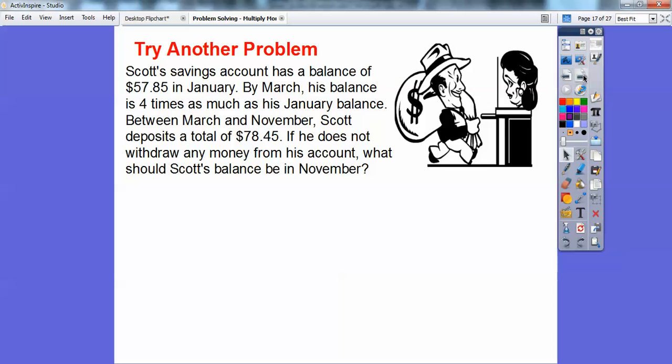All right, let's try another one. Scott's savings account has a balance of $57.85 in January. By March, his balance is four times as much as his balance in January. Between March and November, Scott deposits a total of $78.45. If he does not withdraw any money from his account, what should Scott's balance be? My students often see a word problem, and they freeze, and they don't even try to do that.